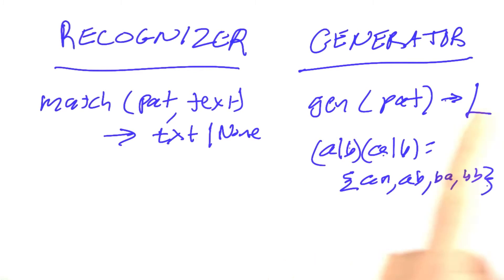We could define a function that takes a pattern and generates out that language. That all seems fine. One problem though is if we have a language like A star, then the answer for that should be the empty string or A or AA or AAA and so on. It's an infinite set. That's a problem.